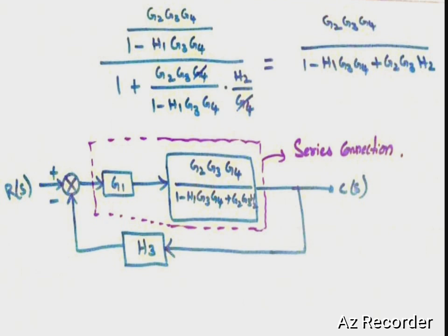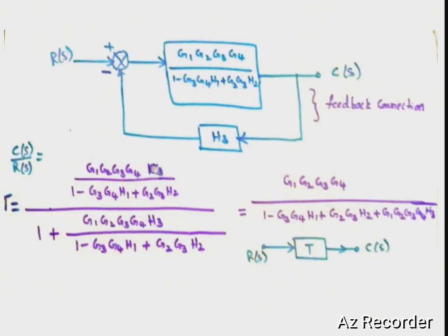The resultant block is again in series with G1, so I apply the series connection formula — the product of these two transfer functions. This combined block is then in feedback with H3, so again applying the feedback formula G/(1 + GH) with a minus sign. After simplifying, you get the final transfer function. The block diagram is now fully reduced to this single transfer function T.